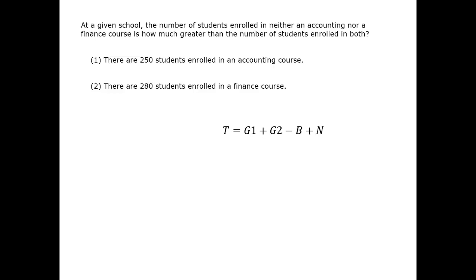This gives us an idea of everything that we need to know to answer the question. If we want to know how much greater the number of students enrolled in neither was than the number enrolled in both, then we're looking for N minus B. We're going to need to find T, G1, and G2 in order to get the answer.